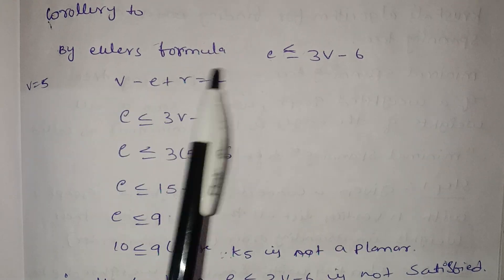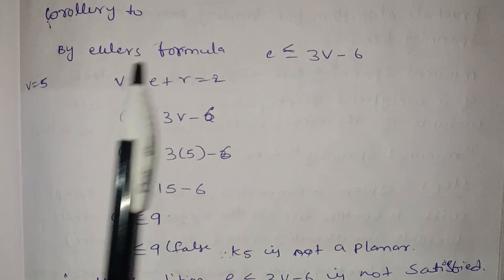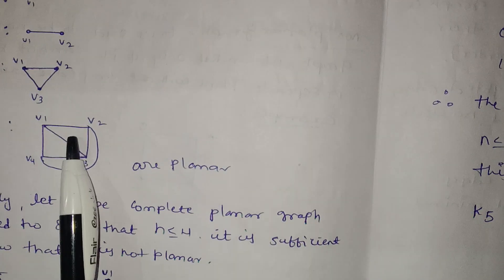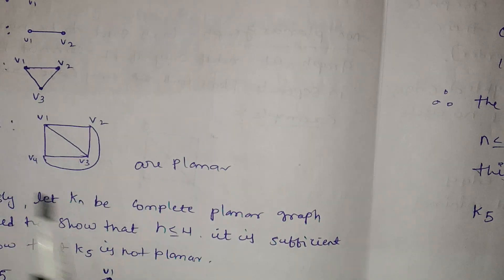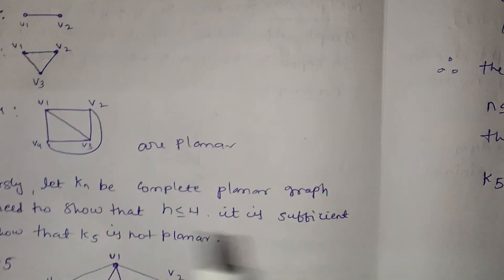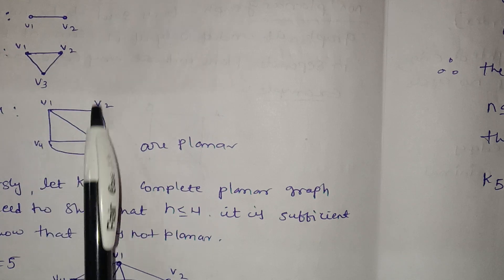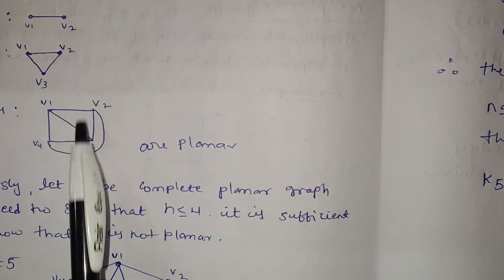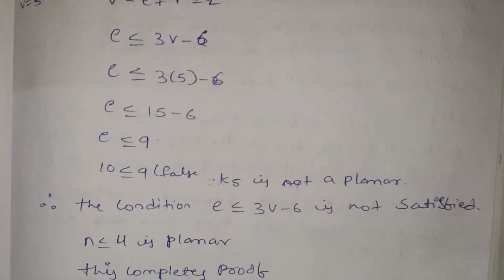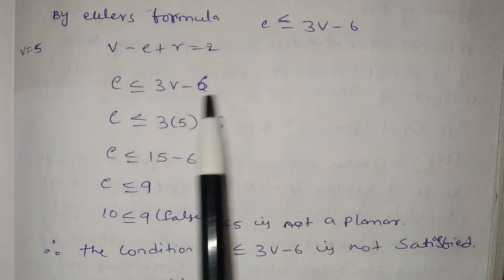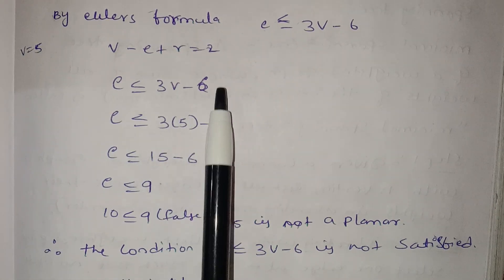Now, this formula involves edges and regions. The vertex count is 1, 2, 3, 4 — vertices V. Next, edges. Regions are here. Now, E is less than or equal to 3V minus 6.